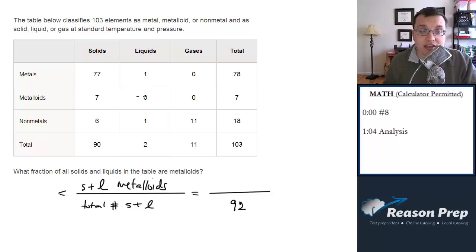And how many of these solids and liquids are metalloids? It's just 7. So our final answer is going to be 7 over 92.